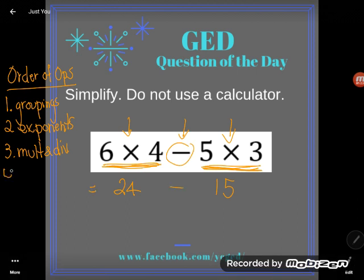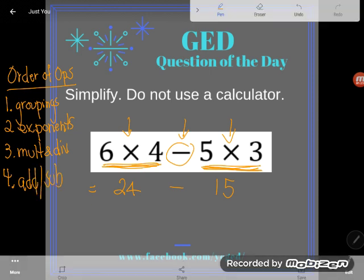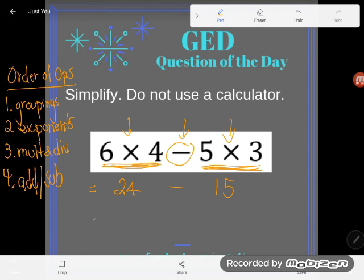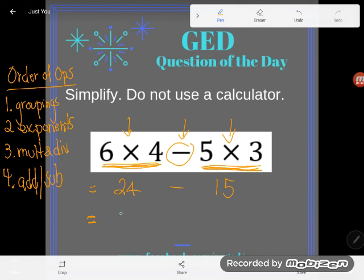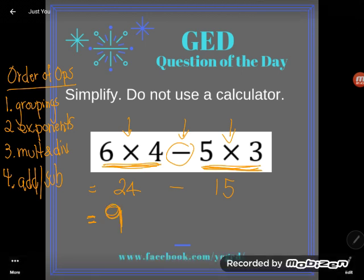Which makes sense because the last step to the order of operations is to do addition and its inverse subtraction. So 24 - 15, I like to screw this one up - my brain always flips to 11, but this is 9. I think I screwed this one up in a video before.